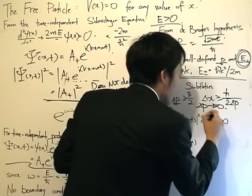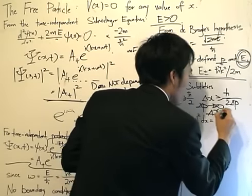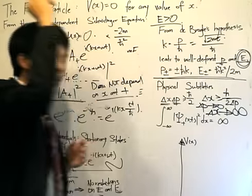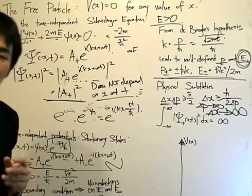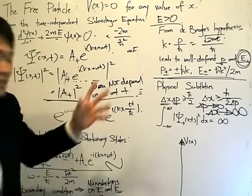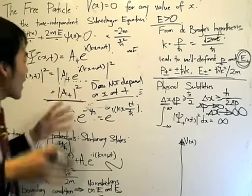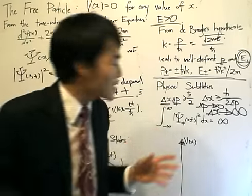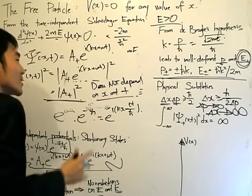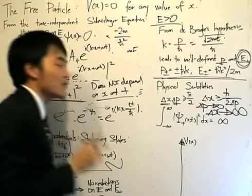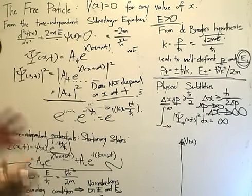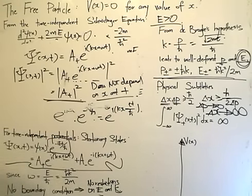Delta x — what does it tend towards? It tends towards infinity. So the accuracy in measuring the position is too large — it's infinity. That's why there's a complete loss of information on the position. That is the first physical subtlety that we have to handle in terms of interpreting what these solutions mean.